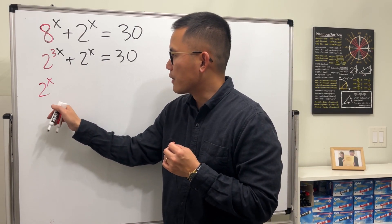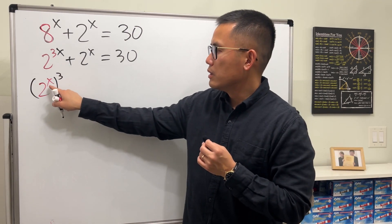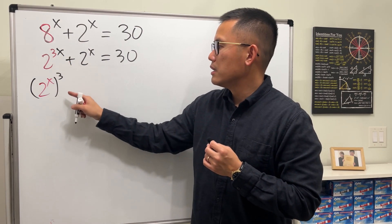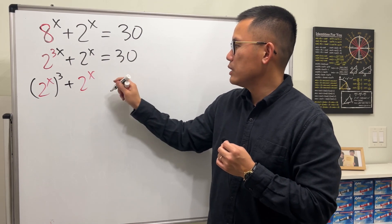And the reason I want to do that is because we have 2 to the x right here as well. So I'm going to put 2 to the x first, and then raise to the 3rd power. You can multiply the exponents, it gets 3rd power. So this and that are the same thing. And then this right here is plus 2 to the x, and that's equal to 30.